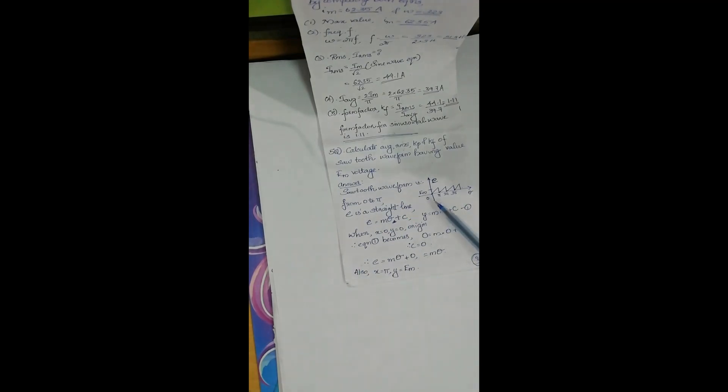For a sawtooth waveform, the waveform is given in this diagram and it is having a time period of pi interval. So after pi interval, the particular waveform is getting repeated.